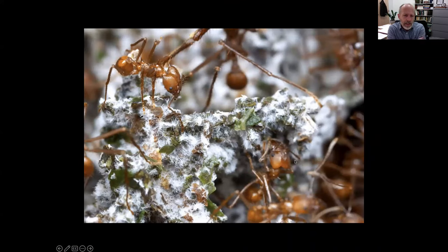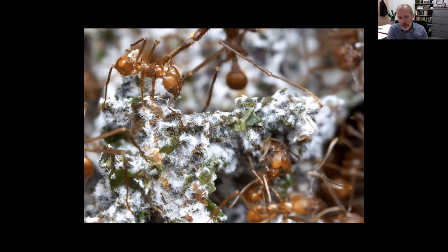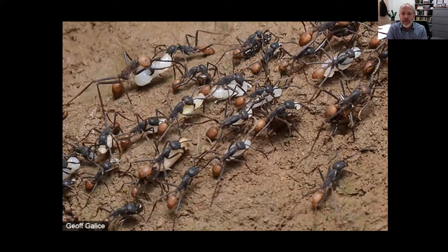Not only do ants numerically dominate in terms of biomass, but they also form really important parts of communities in the ways that they interact. They form complex symbiotic relationships — this is just a picture of some fungus-growing ants, which have a complex symbiotic relationship with fungi and a number of other partners in a mutualism that stretches back tens of millions of years. Ants also dominate as major predators. In the New World tropics, the largest predator in terms of biomass is the army ants — not jaguars, not mountain lions, but army ants.